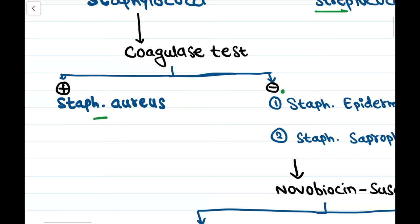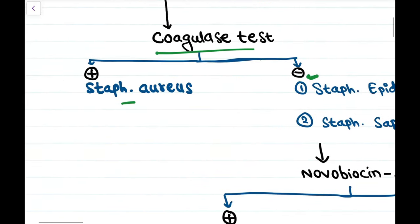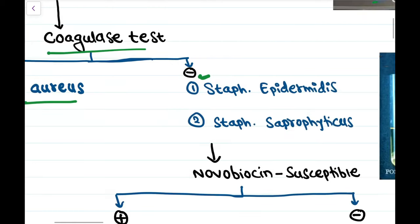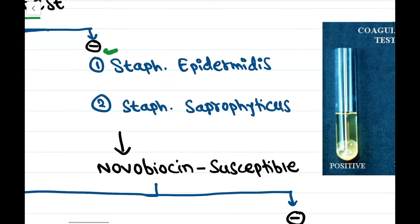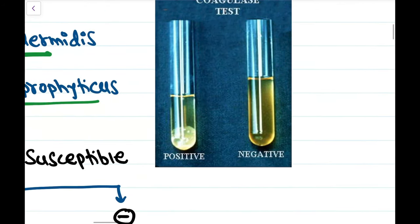Staphylococci are further divided into coagulase positive and coagulase negative based on the coagulase test. Coagulase positive Staphylococci are Staphylococcus aureus, and coagulase negative are Staph epidermidis and Staph saprophyticus.